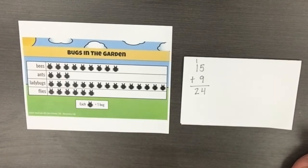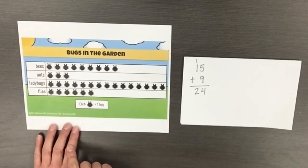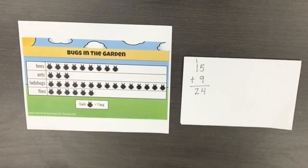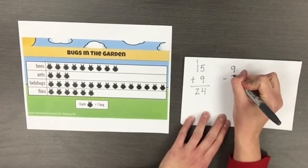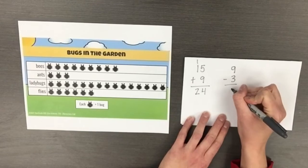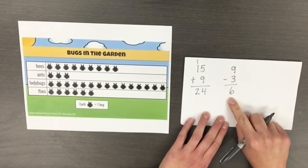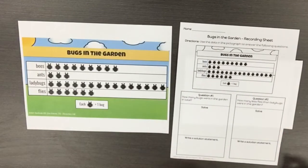Ask a subtraction question such as, how many fewer ants than bees were in the garden? Direct students to compare the number of bees, 9, to the number of ants, 3, to find the difference — giving us 6 fewer ants than bees. A recording sheet with additional practice has been provided.